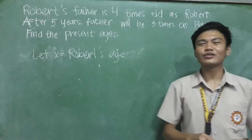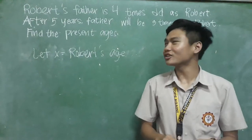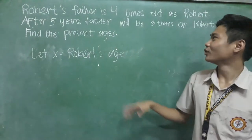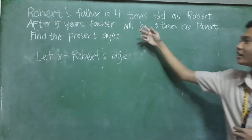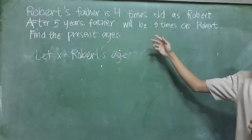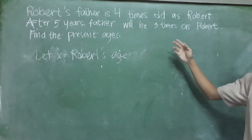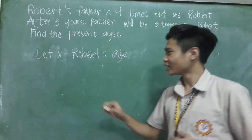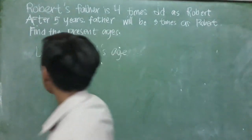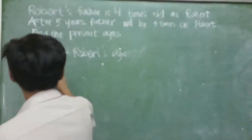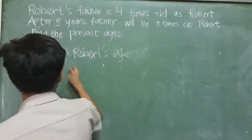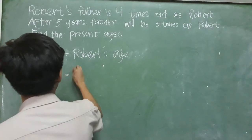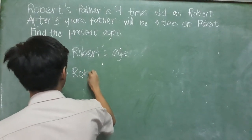So now we have to set the equations. It is stated here that Robert's father is four times as old as Robert. So we can write that as 4X equals Robert's father's age.